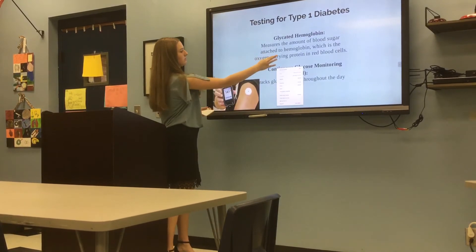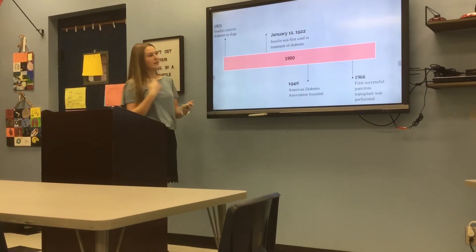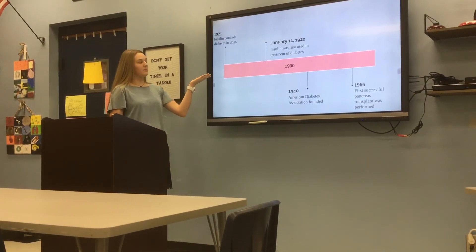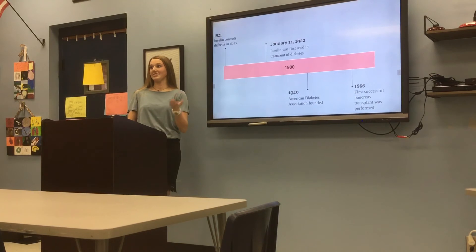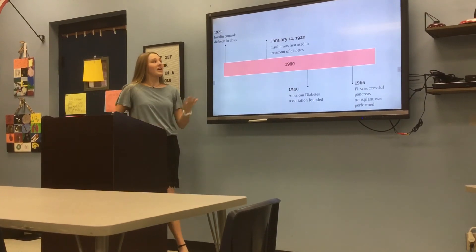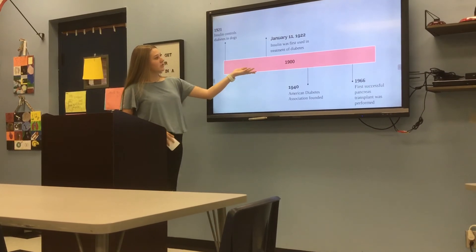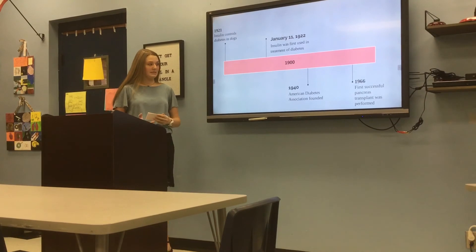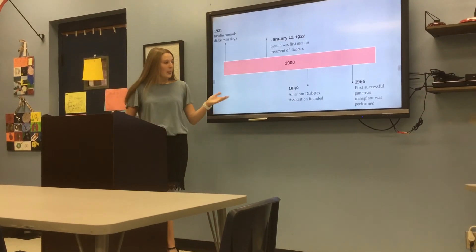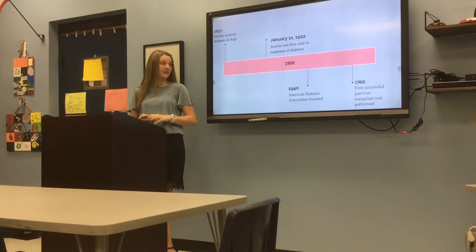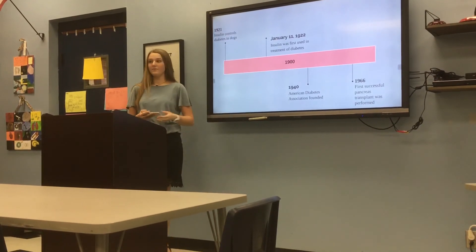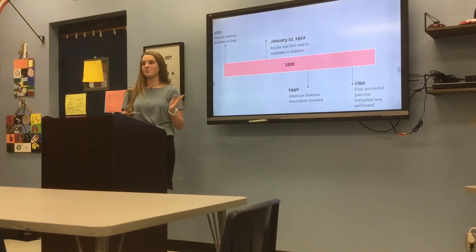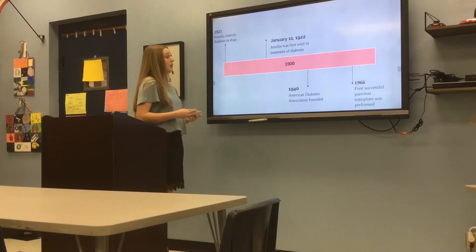Here's a timeline of important events in history. In 1921, insulin was able to control diabetes in dogs — I actually did not know that dogs could get diabetes. Then on January 11th, 1922, insulin was developed for the first time as a human treatment. In 1940, the American Diabetes Association was founded, which is a major source of support and awareness. And in 1966, the first pancreas transplant was performed successfully.